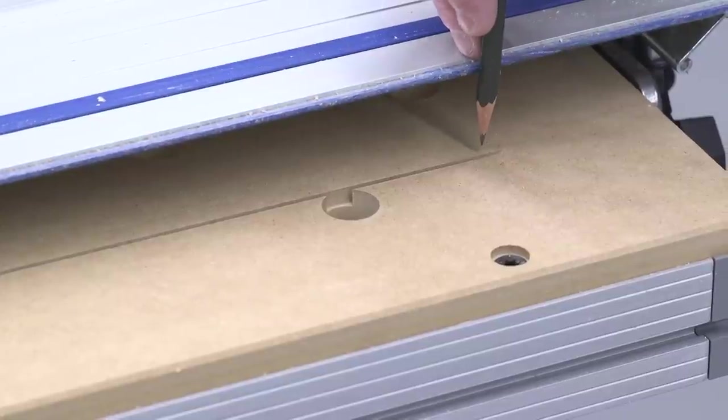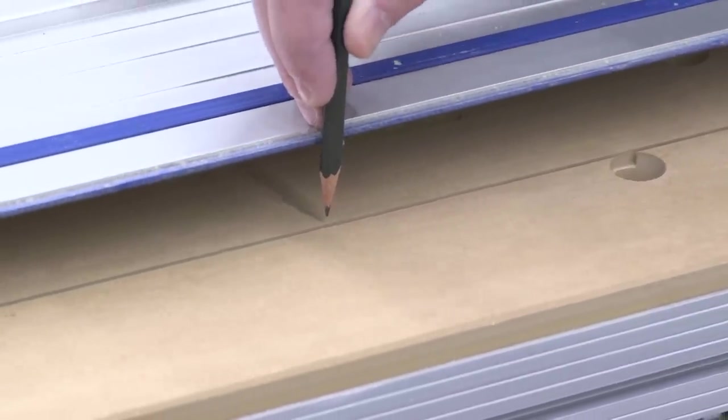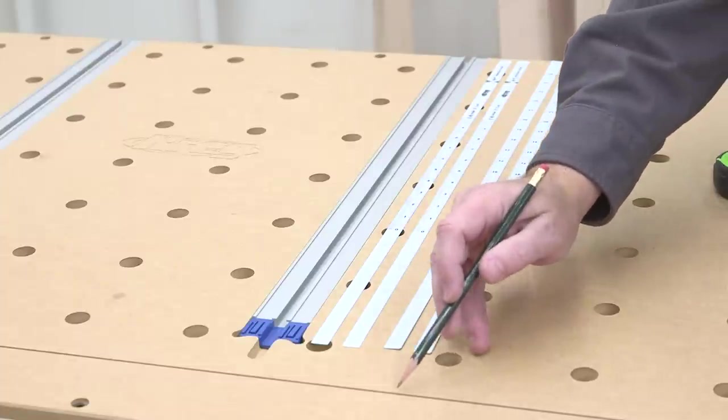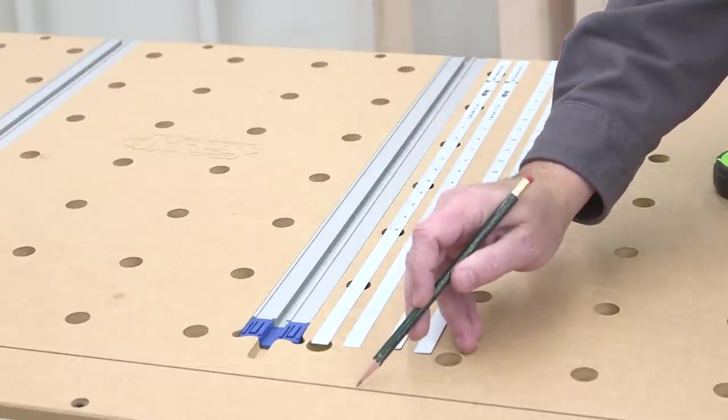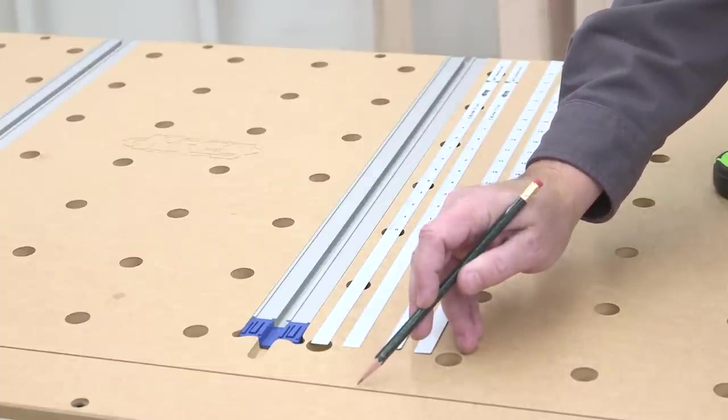That reveals the kerf in the table. This is the line that the saw blade will always follow. The kerf in the table shows where the edge of the saw blade will always be, so you can use the kerf to help install and calibrate the measuring rules.